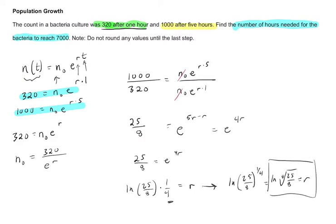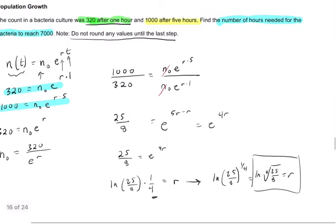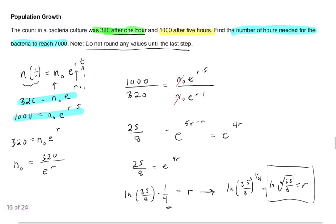Now, I'm going to leave it like that because I know the instructions say to not round any values until the last step. And it might seem really unfriendly to leave it that way, but it's quite useful because now we're trying to find how many hours will pass for it to reach 7,000. Well, for it to reach 7,000, that's going to be n(t). We have this formula, n₀ times e^(Rt). Well, n₀ is 320 over e^R, whatever that number is, times e^R.